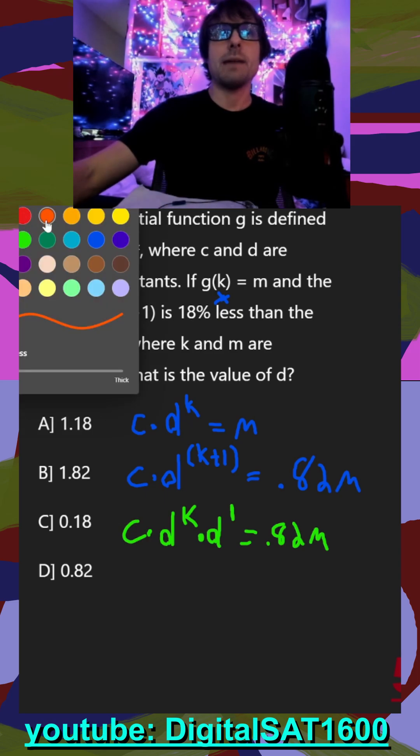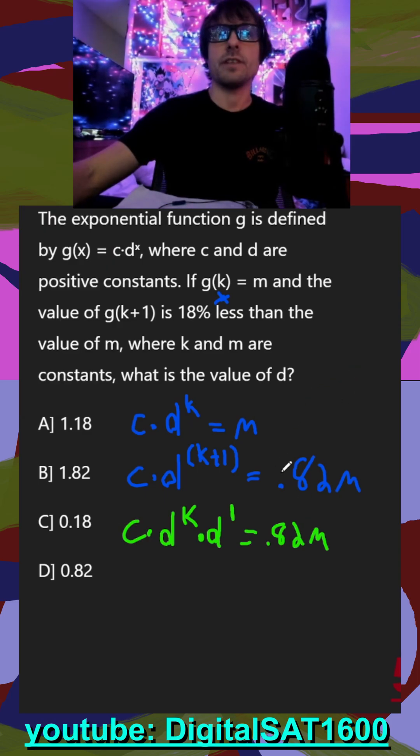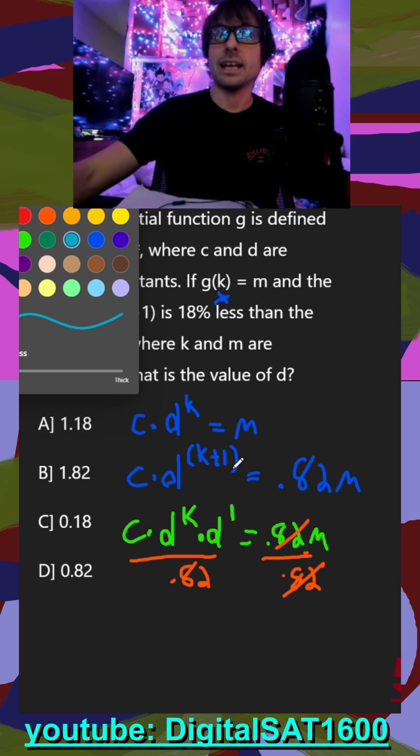And then I have two equations with m, and they want us to solve for d. So if I can get both of my equations to equal m, then I can substitute the other one in. So if I divide both sides by 0.82, that crosses off. And now this is equal to m, this is equal to m. And you see that we have a lot of like terms, so we'll probably be able to cancel stuff out.